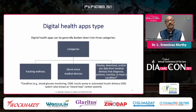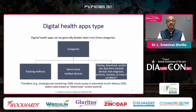Health apps fall into three categories: one is tracking wellness, another is standalone medical devices, and the third is display devices where we use data from the medical devices, which can prevent, monitor, or treat a condition — like CGMs, etc.